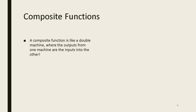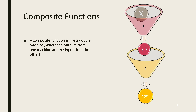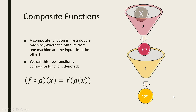A composite function is like a double machine, where the outputs from one machine become the inputs into the other. x goes into the g function and g(x) comes out, then g(x) goes into the f machine and out comes f(g(x)). We can write this more simply as f∘g — the f-circle-g notation — which we read the same as f of g of x.